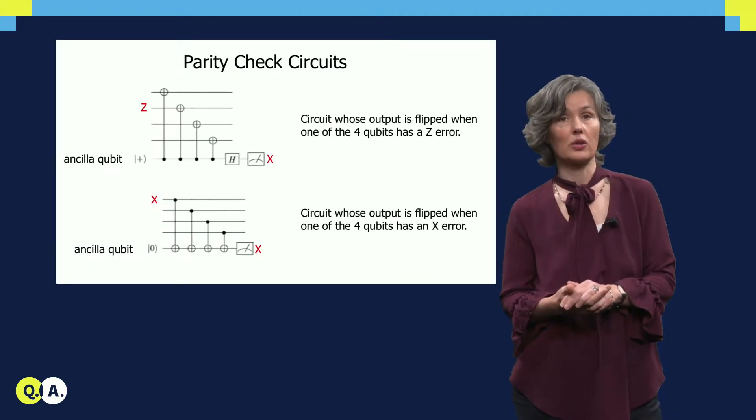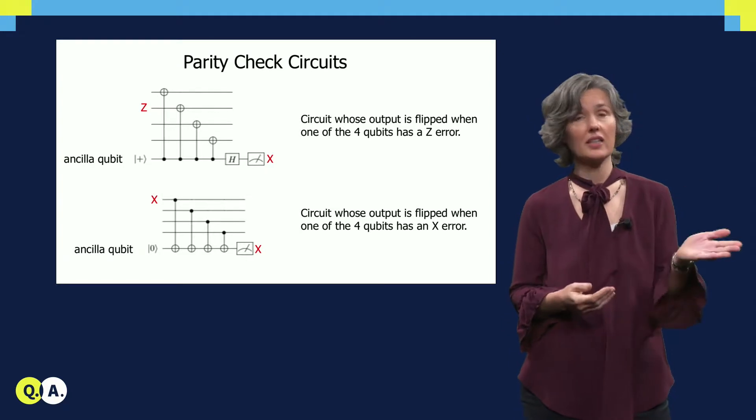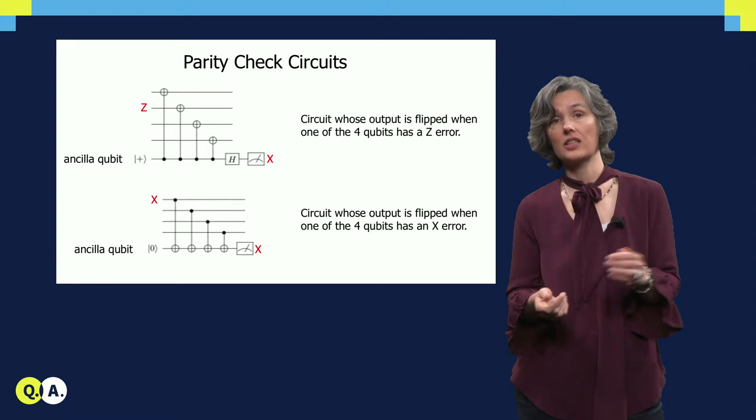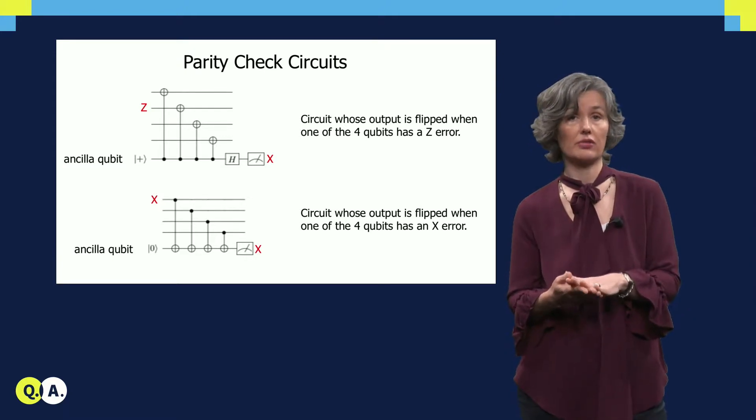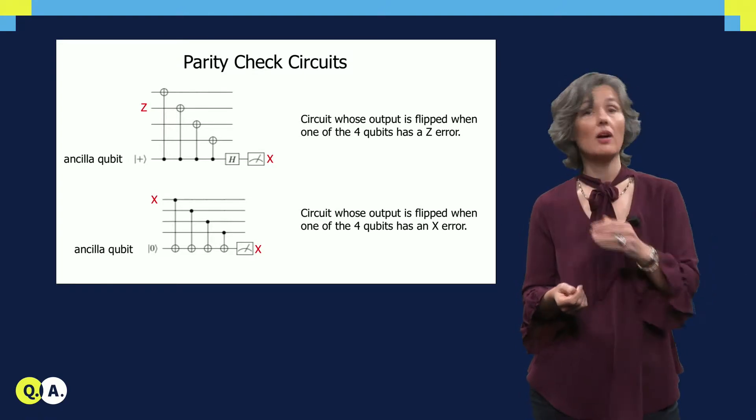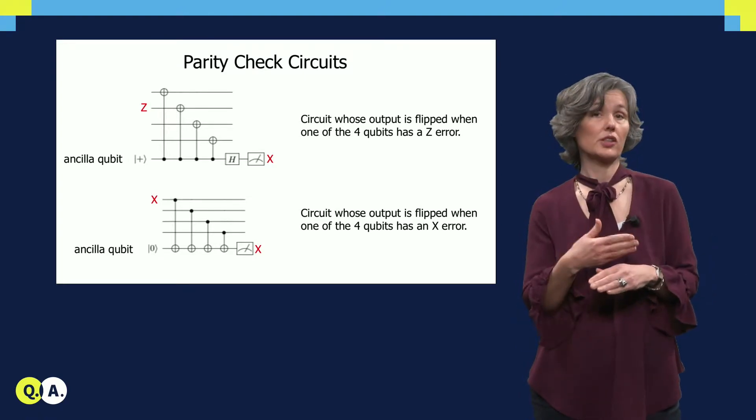For some of these stabilizer codes, one gathers information about x and z errors separately. In such a case, one uses two types of circuits to gather error information. One circuit is for z errors, shown at the top, one other circuit is for x errors, shown at the bottom.